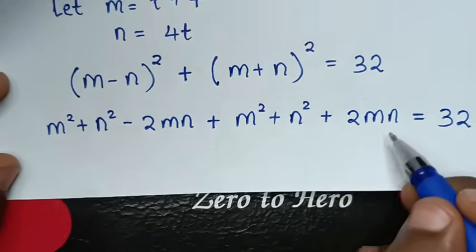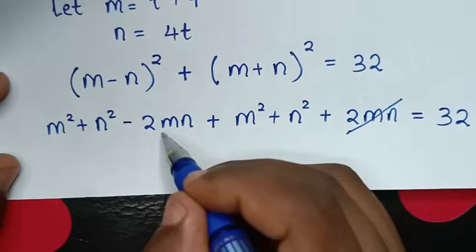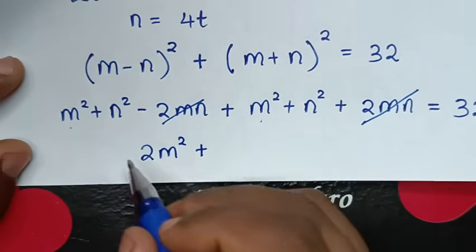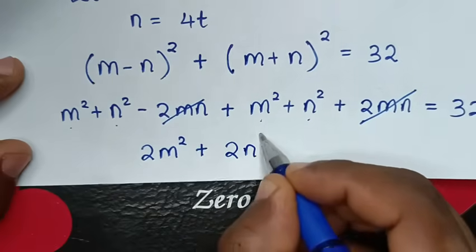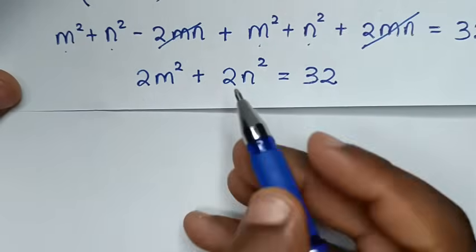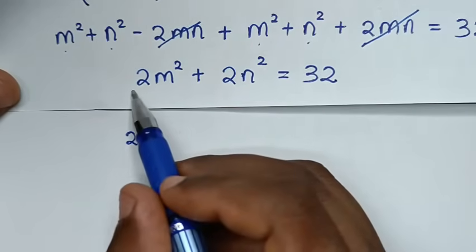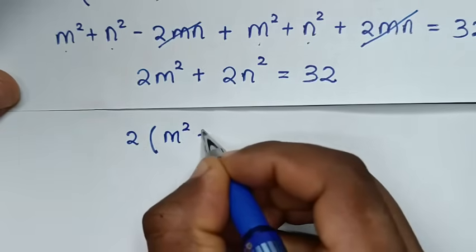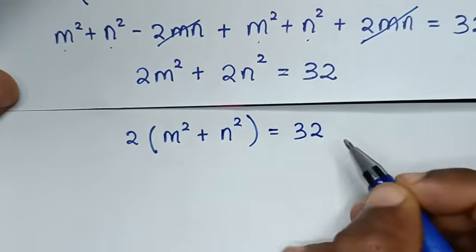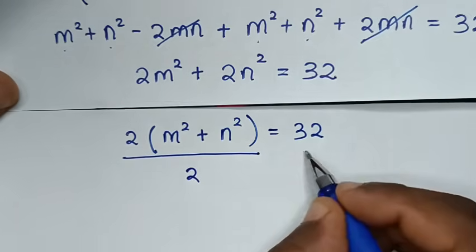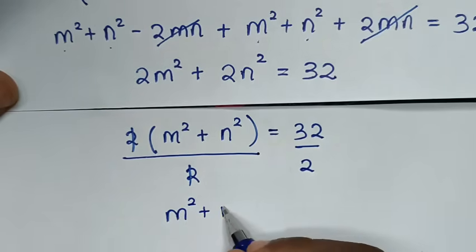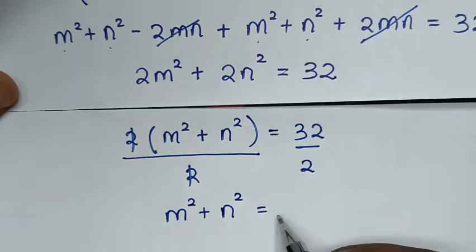The −2mn and +2mn terms cancel, leaving 2m² + 2n² = 32. Factoring out 2, we get m² + n² = 16, after dividing both sides by 2.